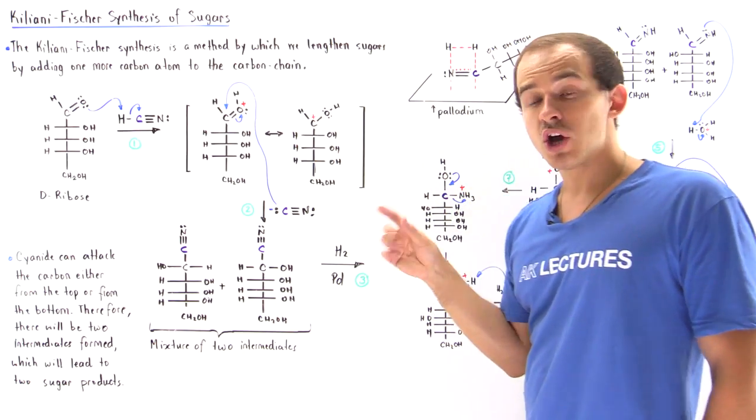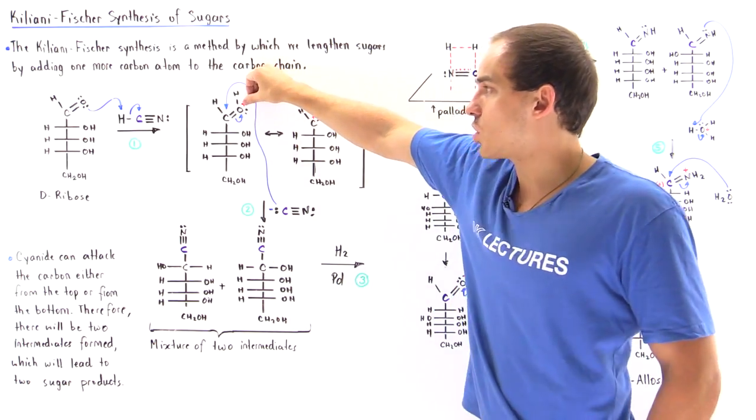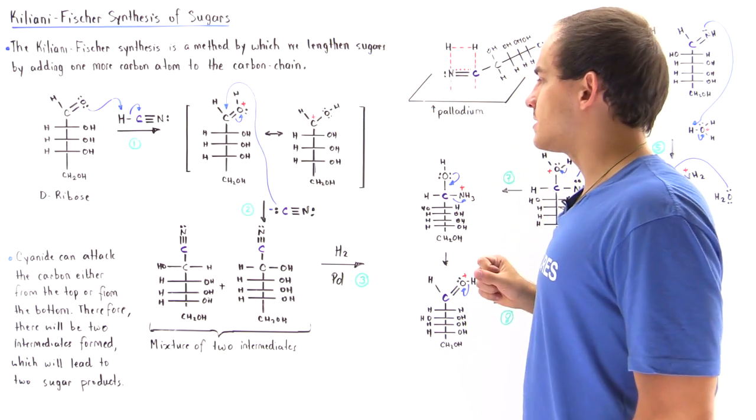Actually, that positive charge is delocalized among two atoms: the positive charge on the electronegative oxygen and the positive charge on this electropositive carbon.